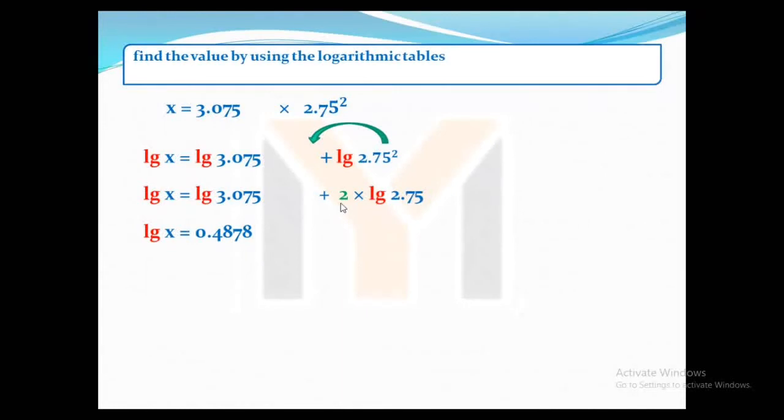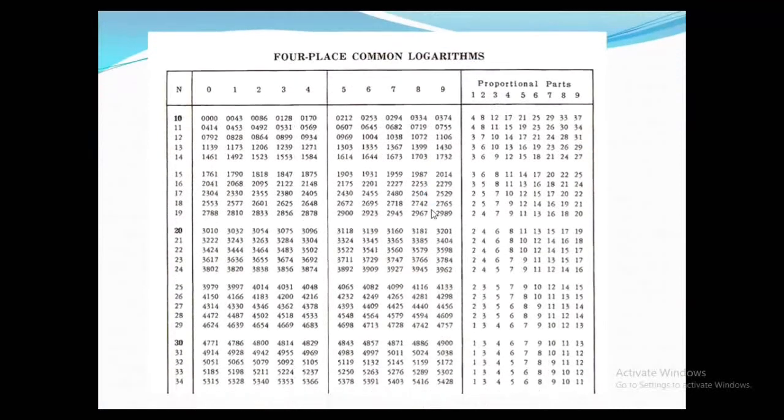Now we'll go to the second one. Here first of all, we have to find the logarithm of this 275. Again, the characteristic is 0, as we explained before. There's only 2, that means only one whole number, so 1 minus 1, that's 0.